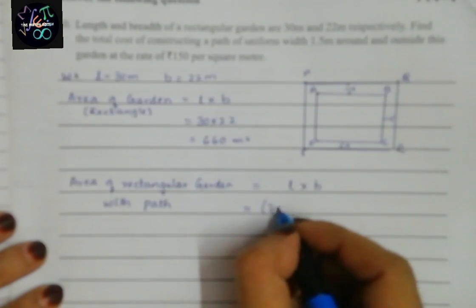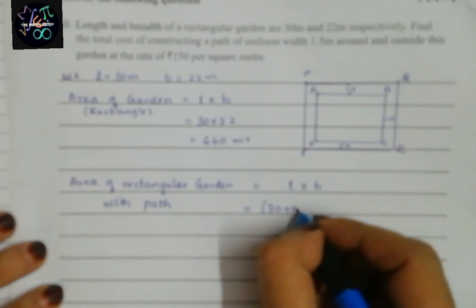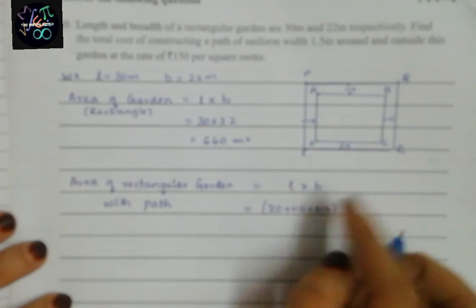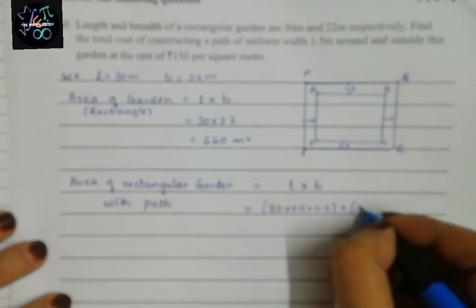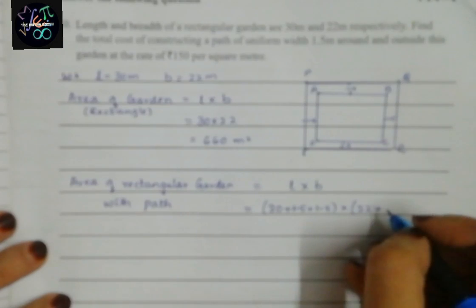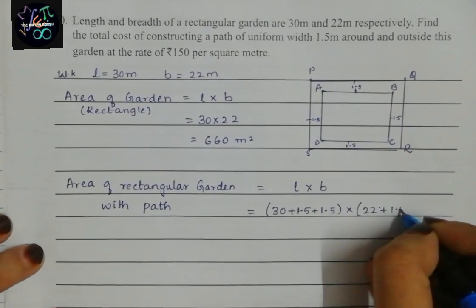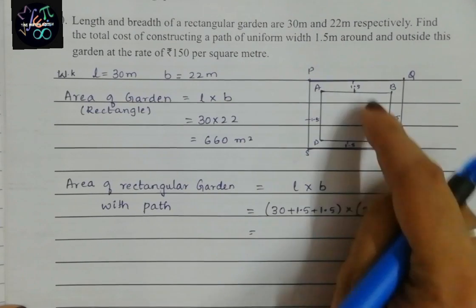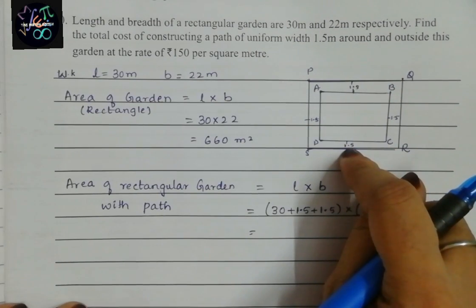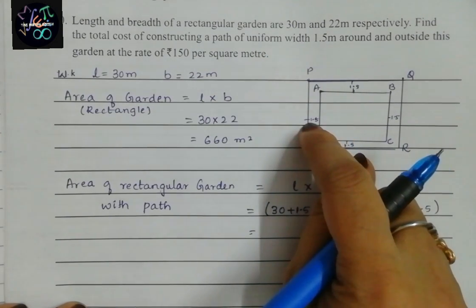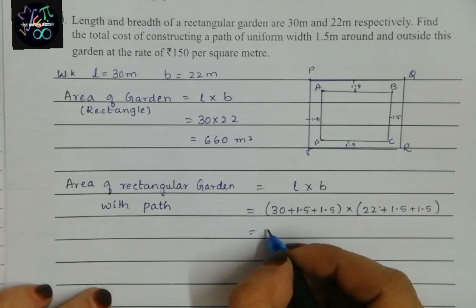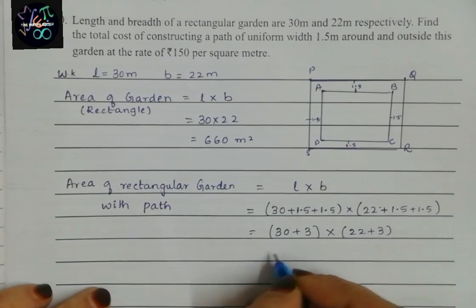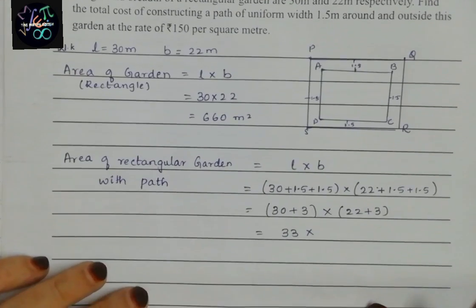What I will do is add 1.5 meters from each side: 30 plus 1.5 plus 1.5 for length, and 22 plus 1.5 plus 1.5 for breadth. Because opposite sides are equal in a rectangle, we add 1.5 from each side. So 30 plus 3 = 33, and 22 plus 3 = 25.